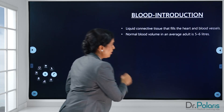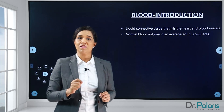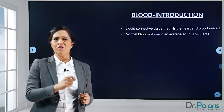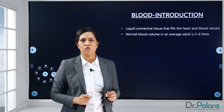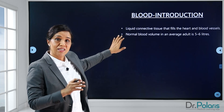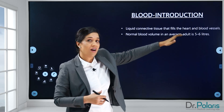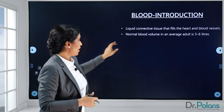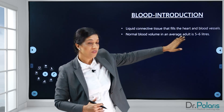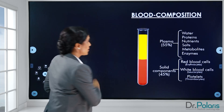Now let's come to the definition of blood. We have a tendency to define blood as a fluid or a liquid which fills your heart and vessels — that's a normal definition an undergraduate medical student gives. But actually, by definition, blood is a connective tissue — a liquid connective tissue that fills the heart and the blood vessels. The normal volume of blood in an adult human being is around five to six liters, and we have variations in that which I'll be discussing.